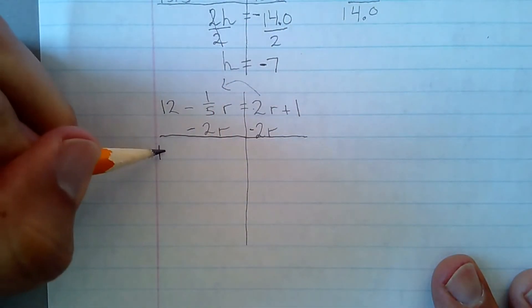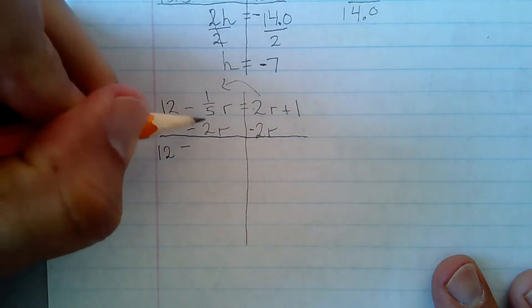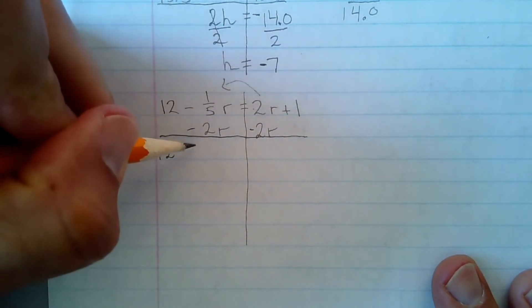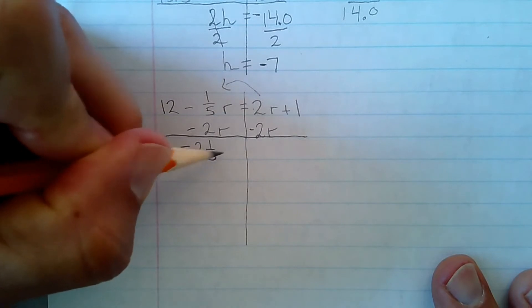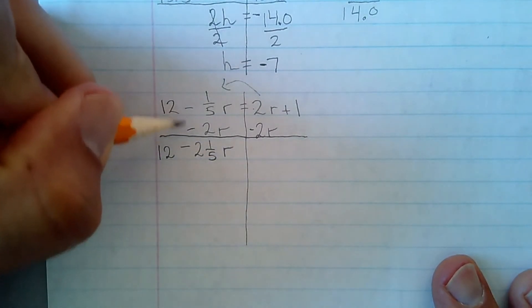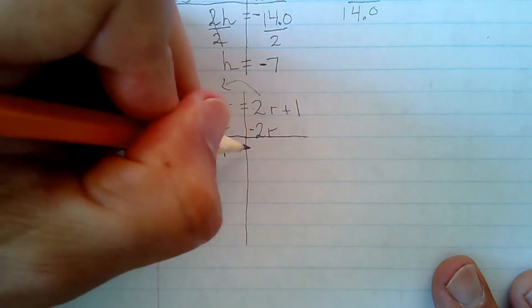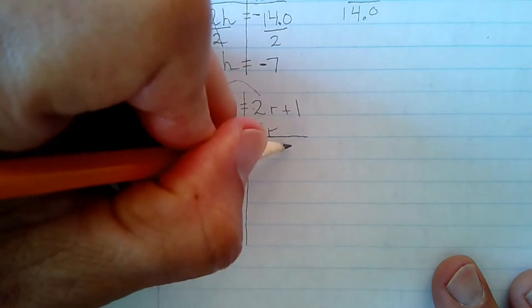Minus 2r. And I have 12 here. Minus, I have to add these two together, so it's minus 2 and 1 fifth r because they're the same sign there. I'm going to add them up. And that's 0. That's what I'm going for. And I have 1.